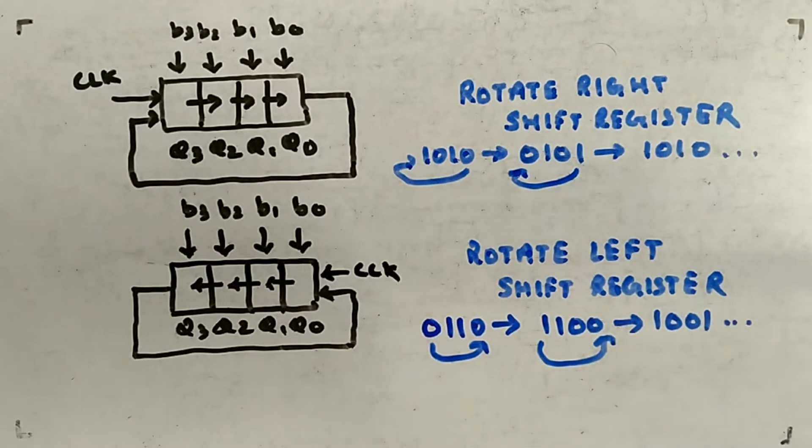So 1100 will be there and this one comes here so it becomes 1001. That's how it will work. Simple representation, nothing complicated.